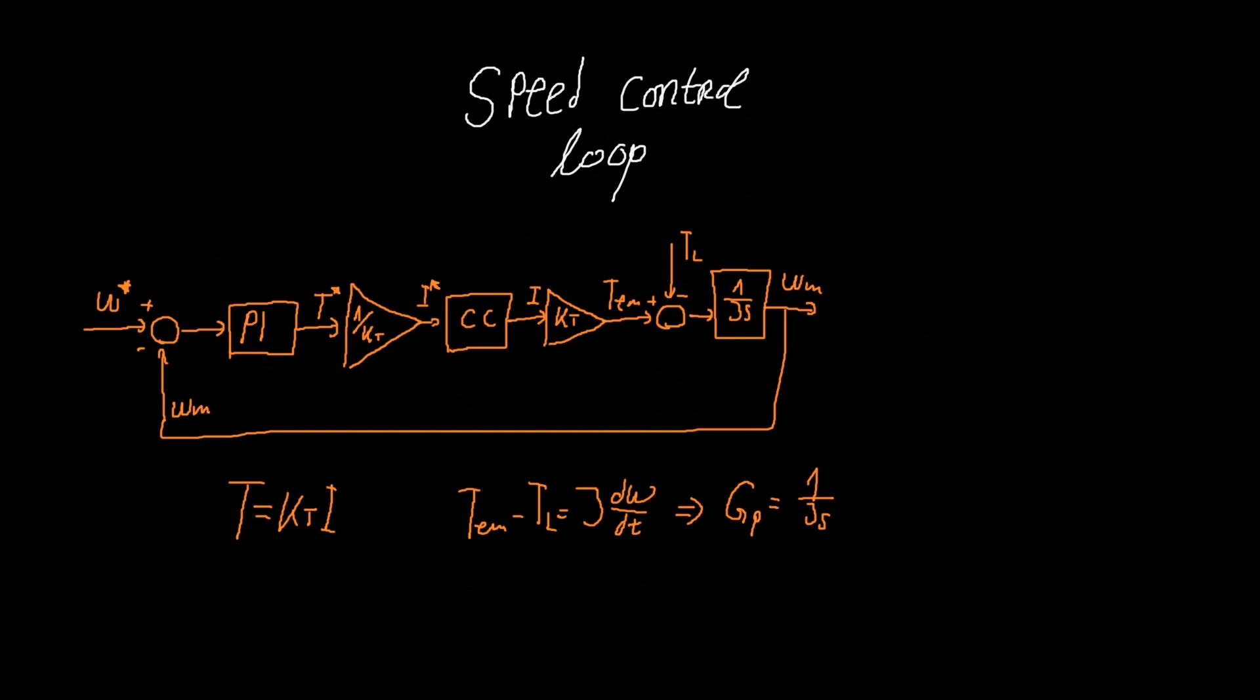Now the question is why are we using PI controller, why not only use proportional gain as the controller? Well because here we have disturbances in the form of load torque. The proportional controller has poor disturbance rejection properties and this will result in non-zero steady state error.